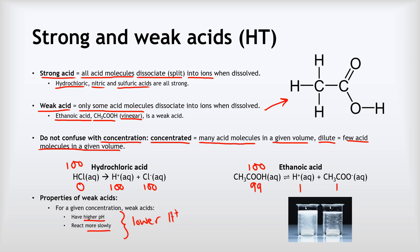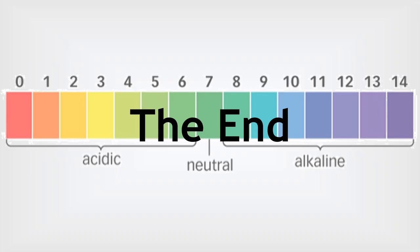Weak acids have a higher pH and react more slowly at a given concentration compared to strong acids — both effects are due to the lower H⁺ ion concentration. In this example the pH of the ethanoic acid is two pH units higher than the hydrochloric acid, because it has only a hundredth of the hydrogen ions. You can see this in the reaction with a metal: the strong acid produces far more bubbles and reacts much faster, while the weak acid reacts more slowly with fewer bubbles. That's the end — thank you for listening and well done for getting this far.